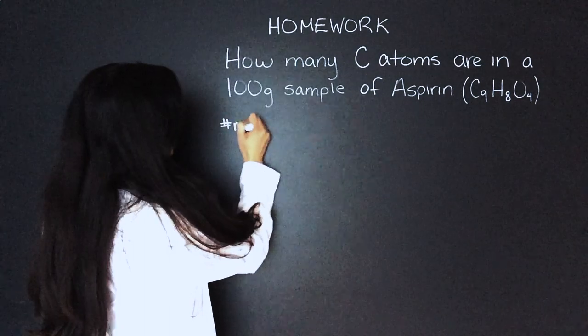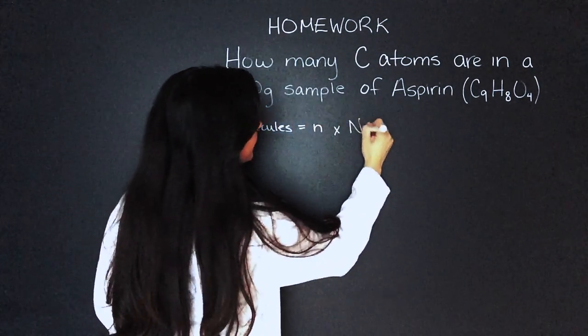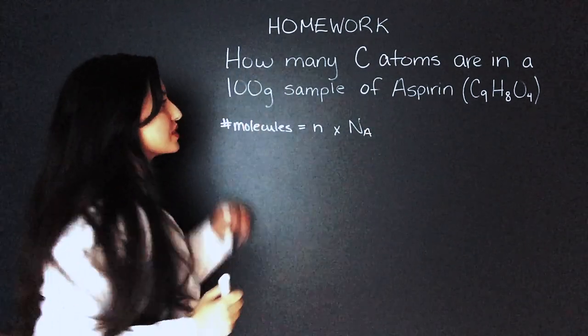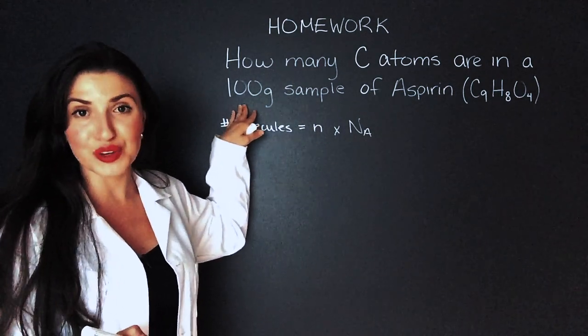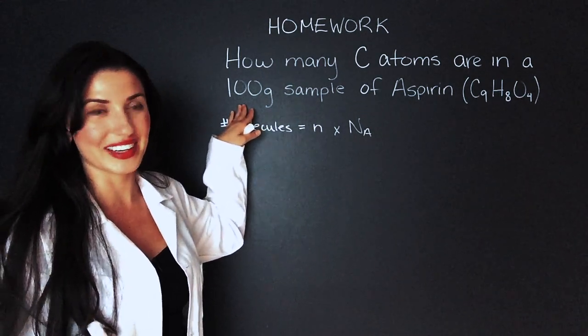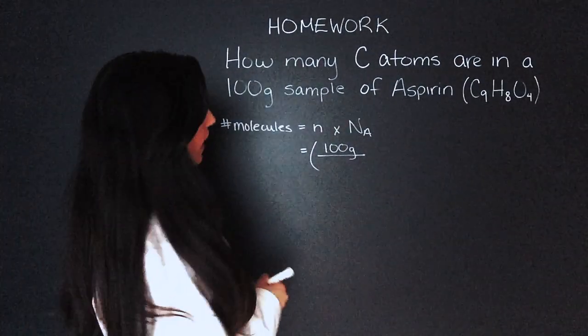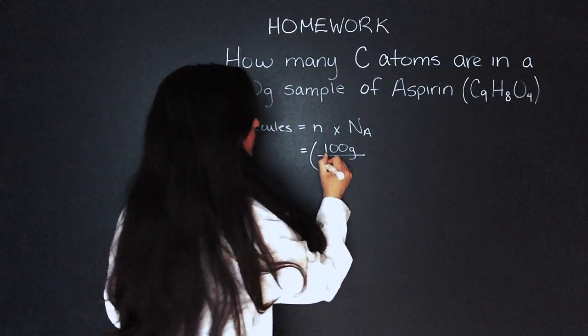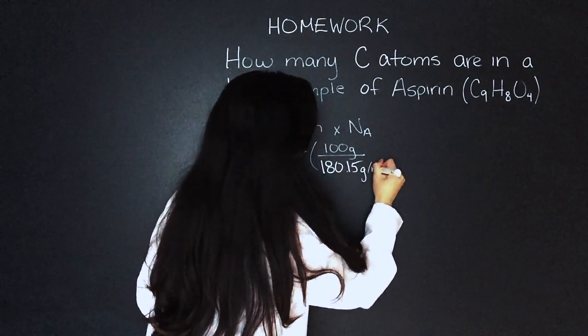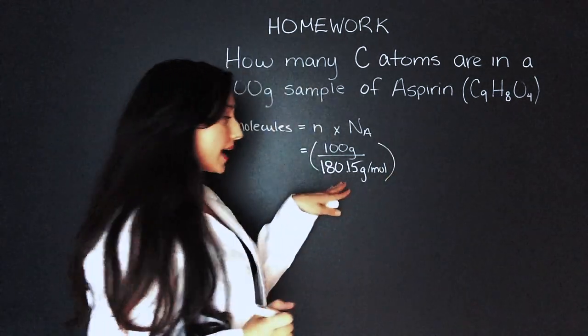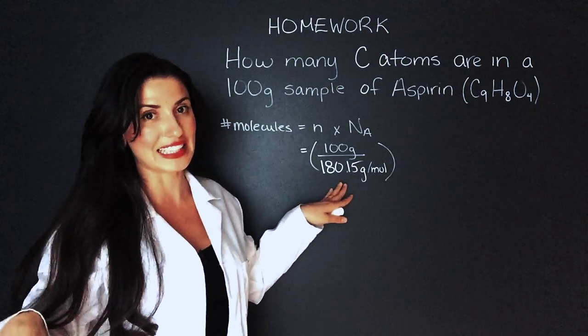Number of molecules equals moles times Avogadro's number. So to find moles we're going to have to use our mass over molar mass equation. If you want a review on how to find moles I'll link the video here. That'll equal 100 grams divided by the molar mass of aspirin which is 180.15 grams per mole. Now I had to calculate that molar mass so if you need a review please go watch my molar mass video. I'll link it here.